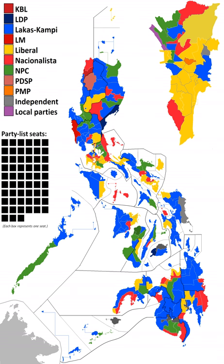As of now, there are 68 representatives that are either term-limited or retiring from Congress.